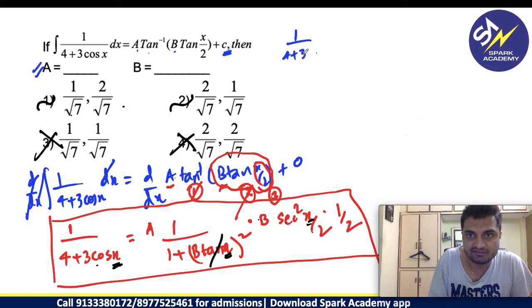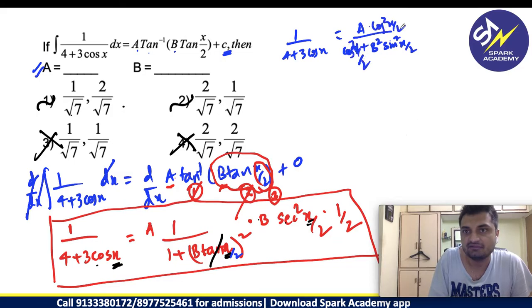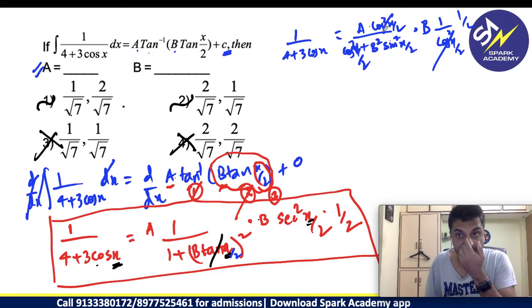How will you simplify this? 1 by 4 plus 3 cos x as it is I am writing. What about this A by, this is tan x by 2 by the way, B tan x by 2. A by 1 plus, how do you write tan? Tan, I can write it as sine by cos. B square sine square x by 2 by cos square x by 2 means here you will get cos square x by 2. Here also you will get cos square x by 2, because I am taking LCM and I am simplifying. What about this? This is B, secant square x by 2 I can write it as 1 by cos square x by 2 into 1 by 2 I am writing. Cos square cos square is getting cancelled obviously.